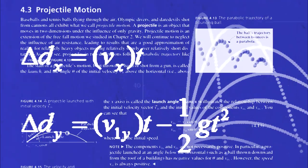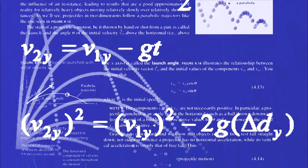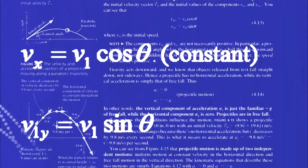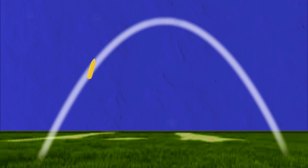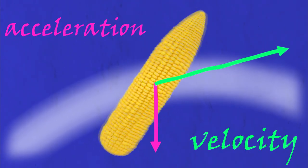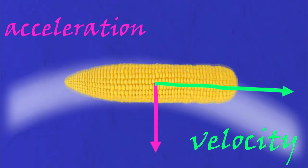Do you remember projectile motion from high school physics? Your teacher might have said something like, when y'all throw something like this here ear of sweet corn, that there ear will follow a parabolic trajectory through the air until it acquaints itself with the ground. What? Didn't everybody's physics teachers talk like that?